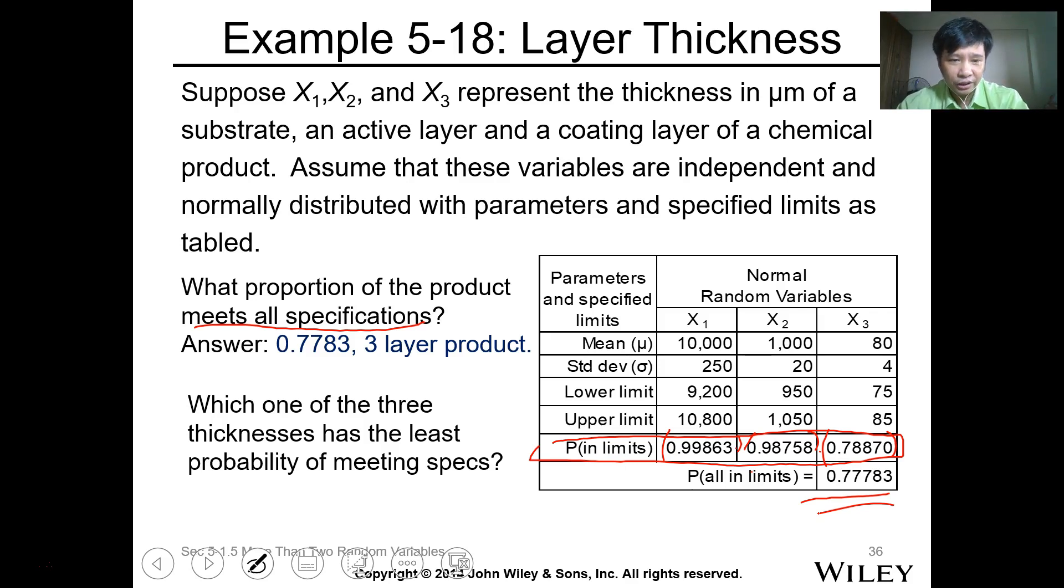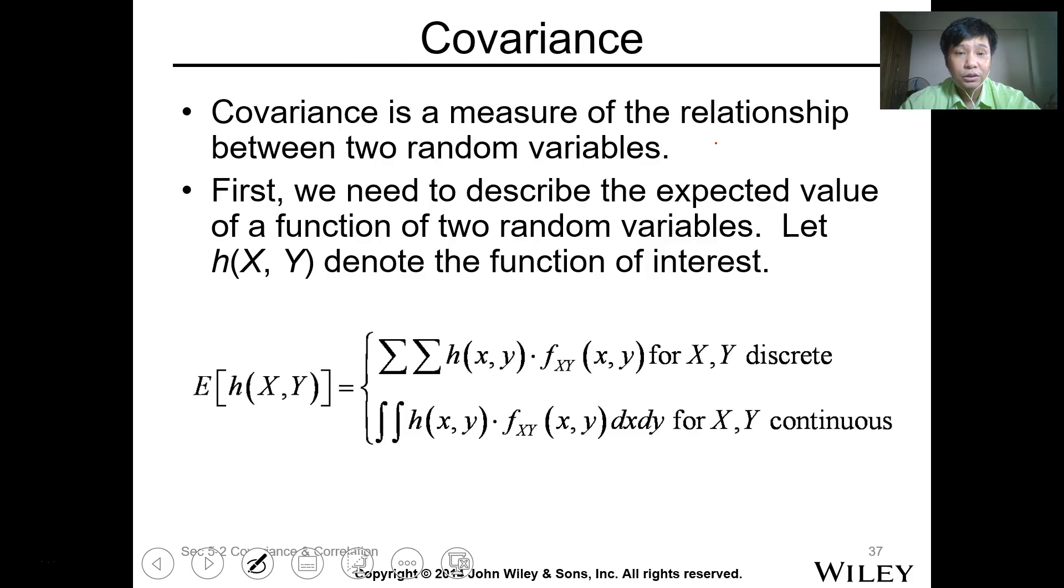The question is: which of the three thicknesses has the least probability of meeting spec? Meaning, which one usually causes problems or is outside the specification. Look at the probability of each, and whoever has the lowest probability, that's the answer. Basically, layer 3, which is the coating layer of our chemical product.